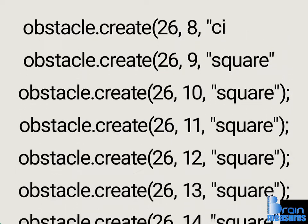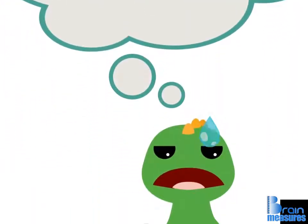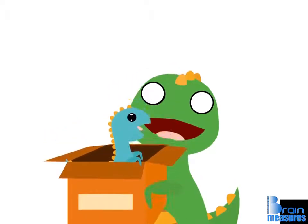In a previous exercise, we changed the shape of all the obstacles in our game. You'll remember that it was a slow and long process, but if we use a variable, we can make these changes much more easily.